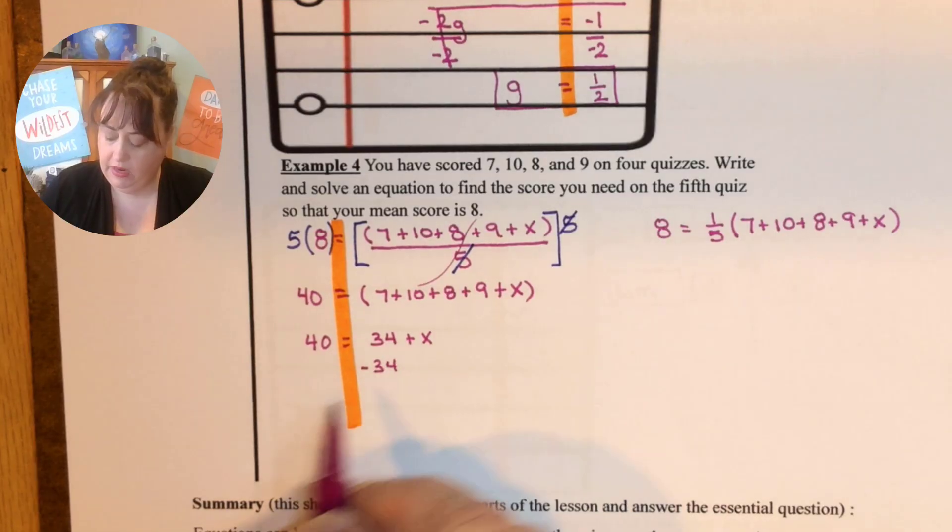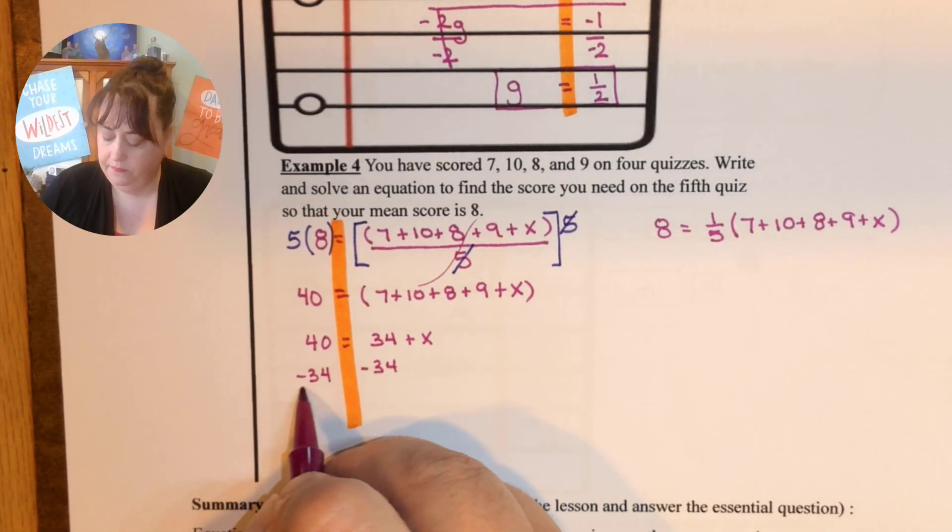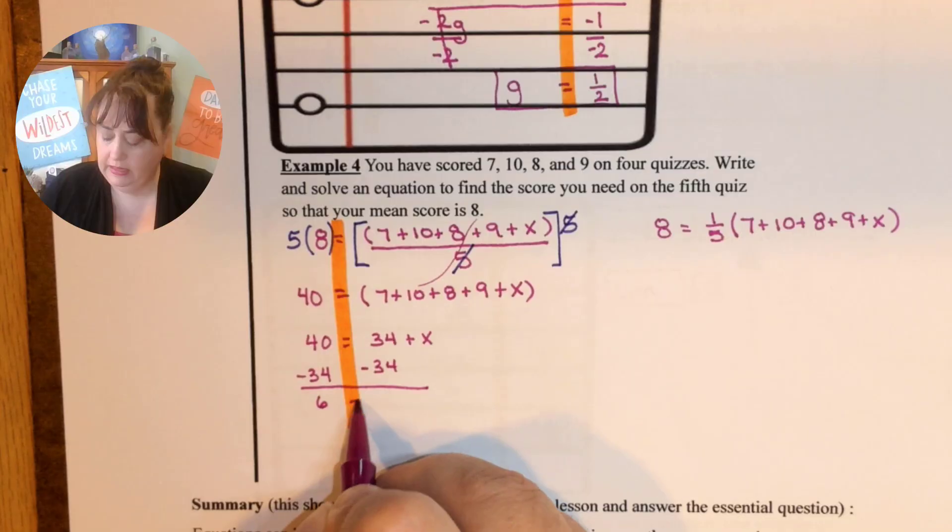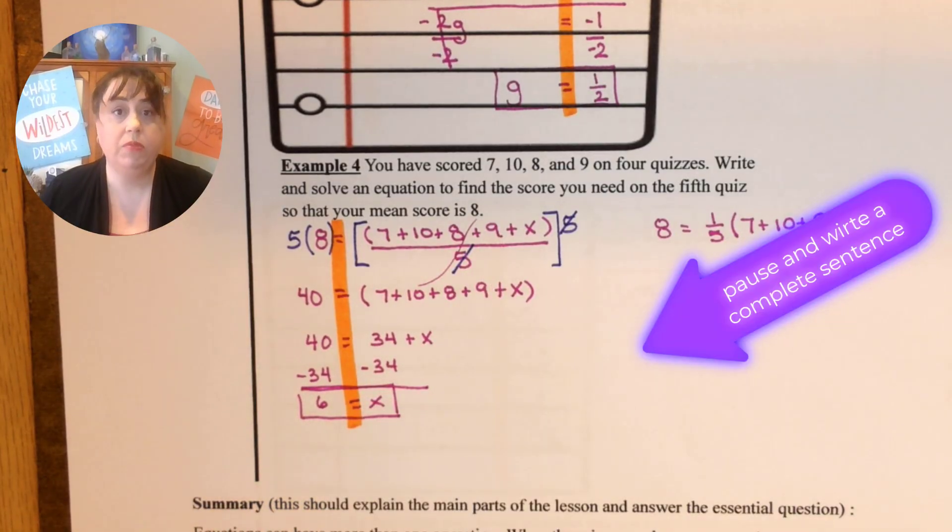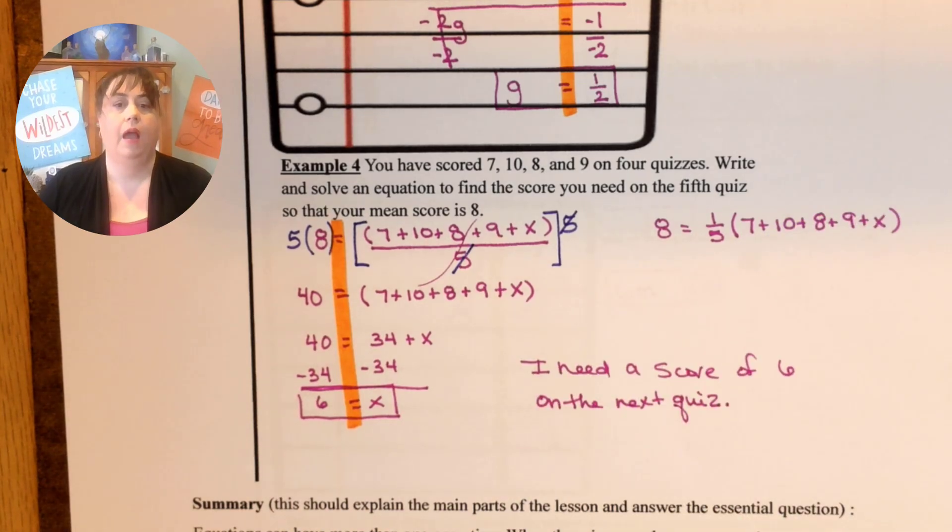Subtract 34 from both sides. 6 is x. But it's a word problem which means my answer needs to be a sentence. So I want you to try to write that sentence and then come on back. I need a score of 6 on the next quiz.